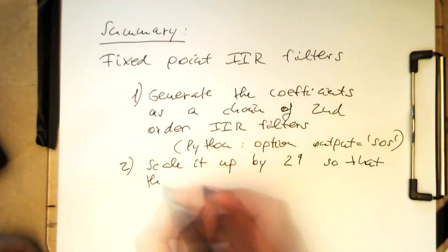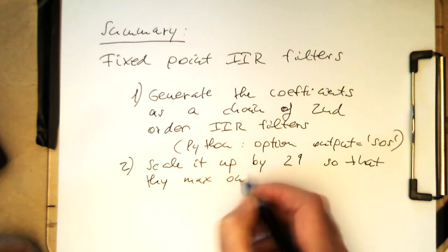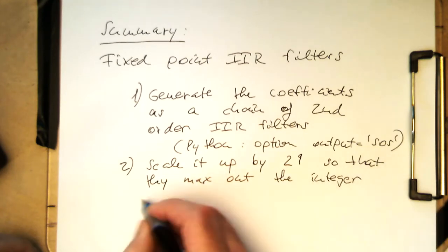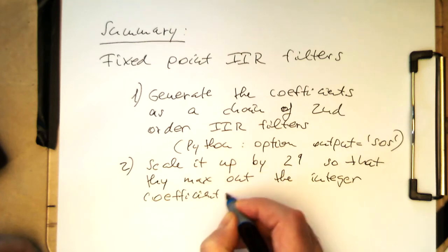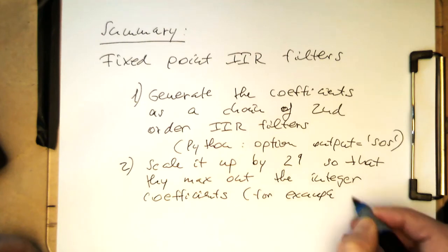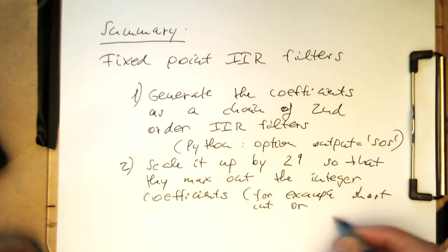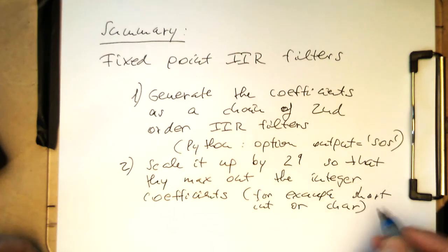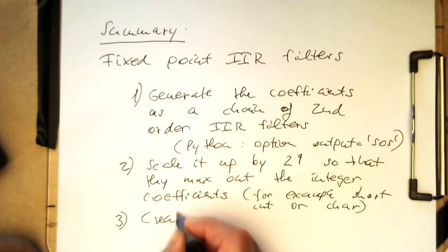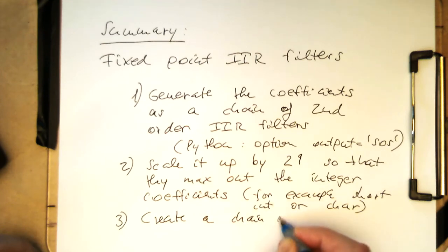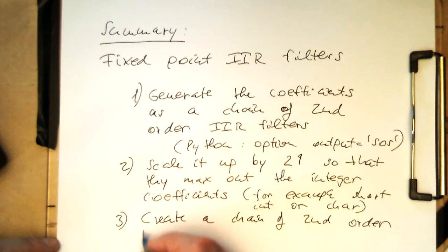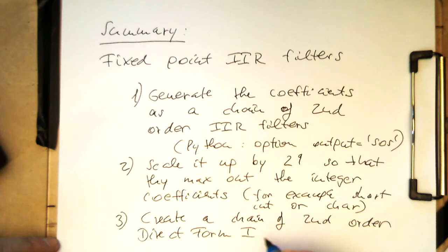So that they max out the coefficients — the integer coefficients. For example, short-int or character. And then as step three, create a chain of second-order direct form I filters.